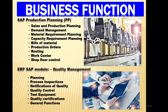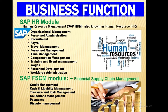Further business functions include: Process Inspections, Quality Notifications, Quality Control, Test Equipment, Quality Certifications, General Functions, Organizational Management, Personnel Administration, Recruitment, Payroll, Travel Management, Time Management, Compensation Management, Training and Event Management, Wages, and Personnel Development. SAP HRM, also known as Human Resource (HR), covers the SAP HR Module. SAP FSCM covers Financial Supply Chain Management.